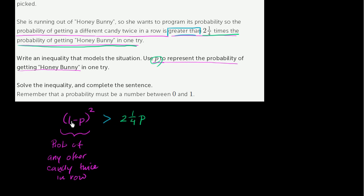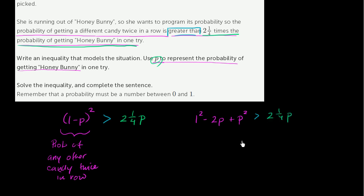To solve, I'll expand (1 minus P) squared. That's the same as 1 minus 2P plus P squared, and that's going to be greater than 2 and 1 fourths P.